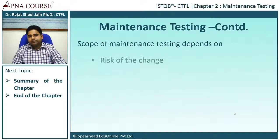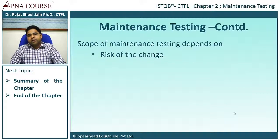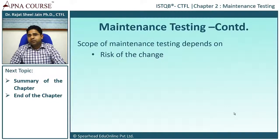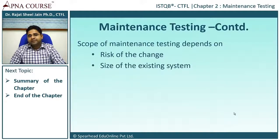Now, coming to the scope and risk of change. If I am changing the software version from version 1.0 to version 1.1, or from version 1.0 to version 2.0, there will be a very huge risk of change. There are chances the maintenance testing will fail at that point. It depends on the extent of the version jump, so this factor can be rated as high.